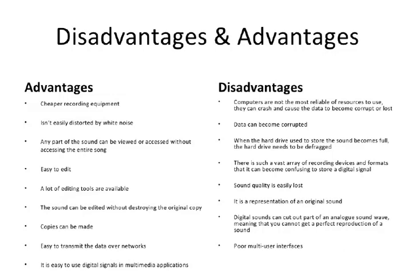Digital systems are easier to design. The switching circuits, in which there are only two voltage levels — high and low — are easier to design. The exact numerical values of voltages are not important because they have only logical significance; only the range in which they fall is important. In analog systems, signals have numerical significance, so their design is more involved.